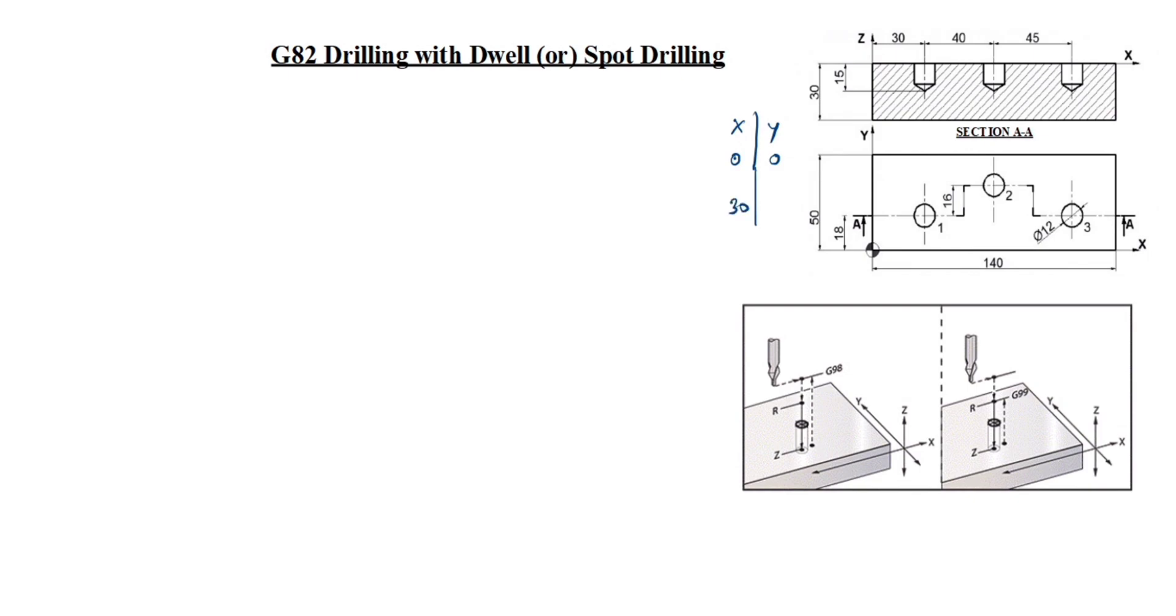For first hole we will take G90 code, this is absolute command. Next hole we will use G91 code. What is mean by G91? G90 is absolute command and G91 is incremental command. I already taught in the last video, I will give it in the description box, please refer that.